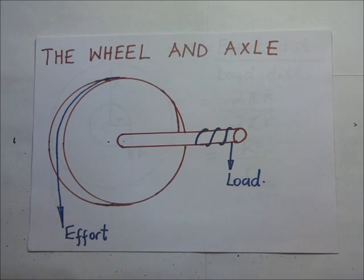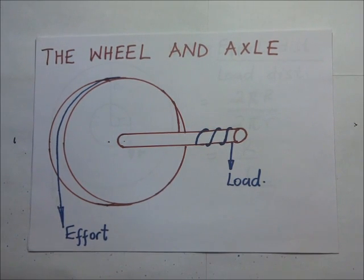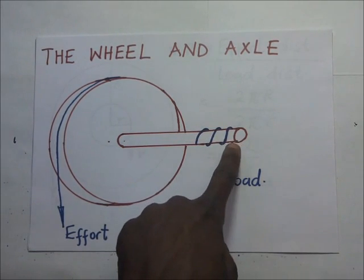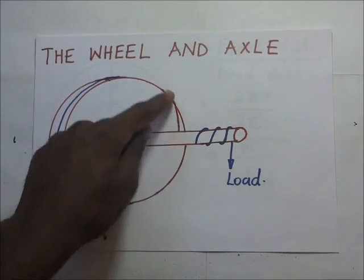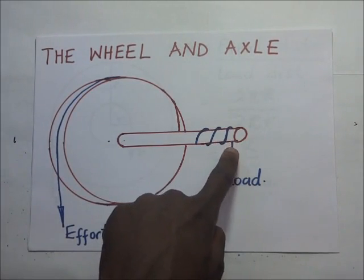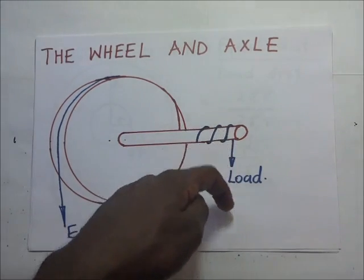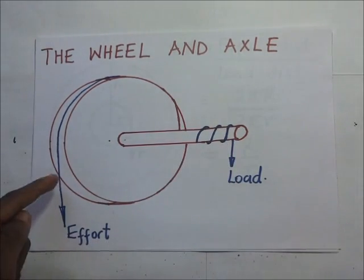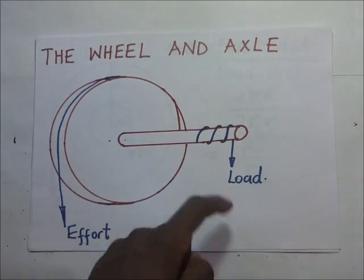The load is applied on a small wheel. The wheel and axle is also used in wells. This end is the small wheel and this is the end of the large wheel. The load — the bucket — is tied here, and the rope goes down into the well, while the effort is applied here to pull the bucket up.